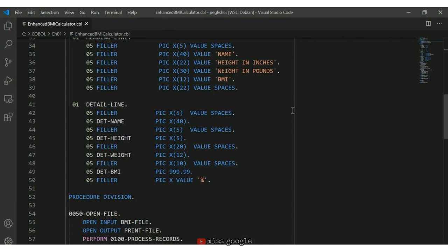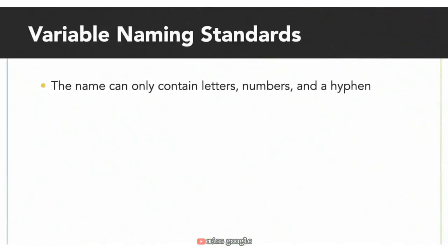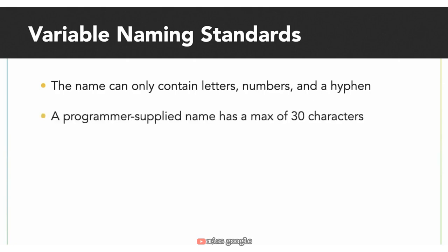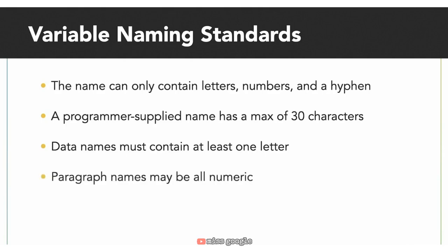It is important to choose meaningful names, but just like other programming languages, COBOL has certain rules when selecting names. User-defined names can contain letters, numbers, and a hyphen, but a programmer-supplied name may not begin or end with a hyphen. Data names may not exceed 30 characters, reserved words may not be used as programmer-supplied names, and data names must contain at least one letter. Paragraph names can contain numbers, letters, and a hyphen, but they can also be all numeric.